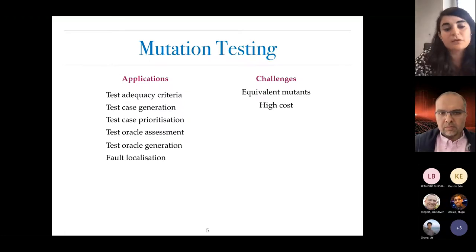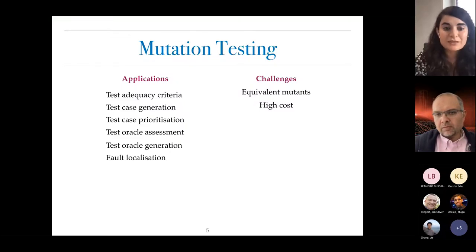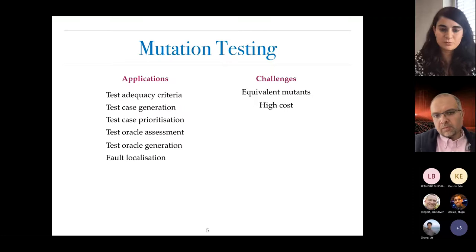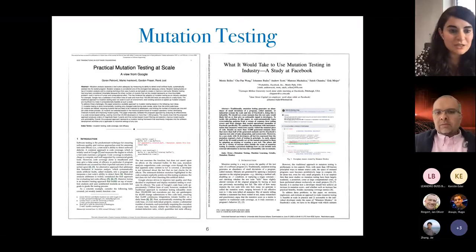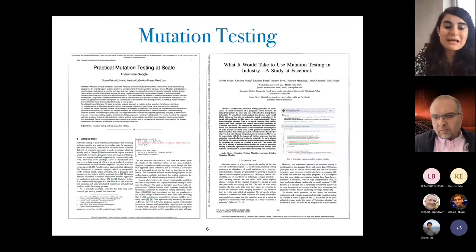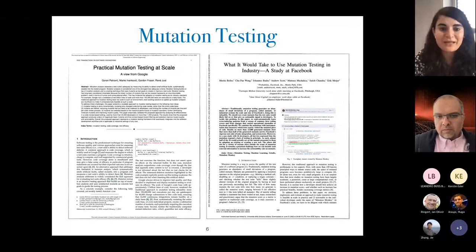Given all these applications, there are also challenges associated with mutation testing. One is the problem of equivalent mutants — where we've changed the program syntactically but not semantically — which give a wrong representation of the mutation score. The main challenge is its high cost, as we have to execute our whole test suite on each generated mutant. Despite these challenges, mutation testing is making its way into practical application at large companies, as evidenced by recent publications describing its application at Google and possible application at Facebook.